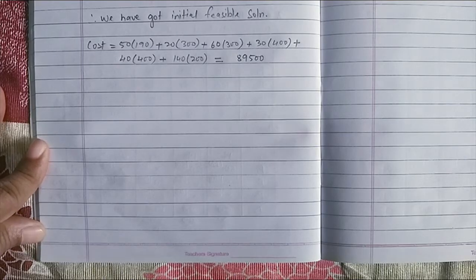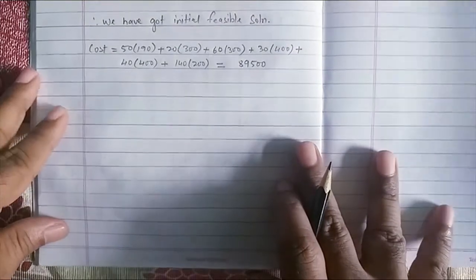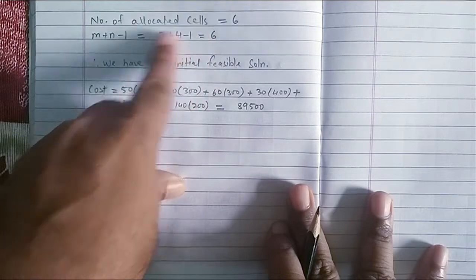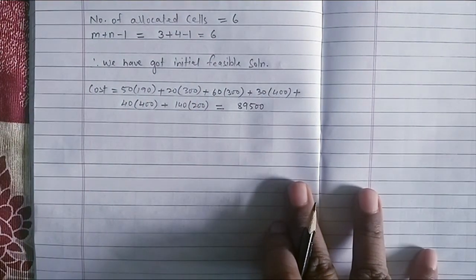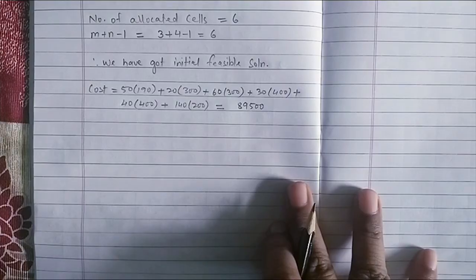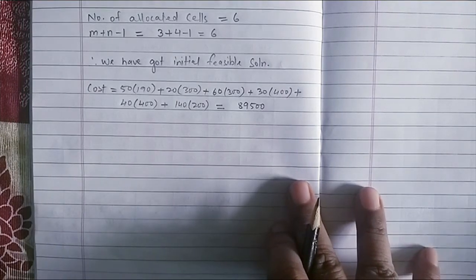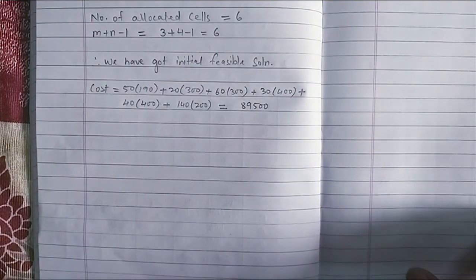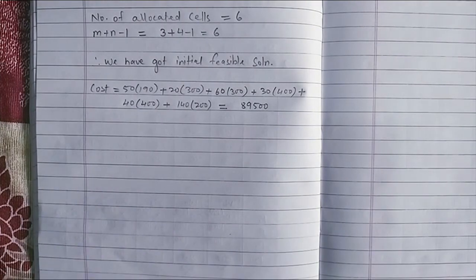That is my initial feasible solution. Just because I have satisfied the condition of the number of allocated cells should be equal to M plus N minus 1. I hope you have understood. Please practice this out. And please remember, this is not your optimum solution. This method is used just to find your initial feasible solution. Thank you.